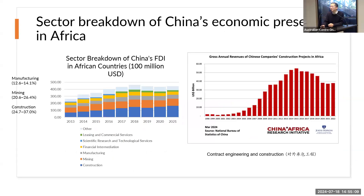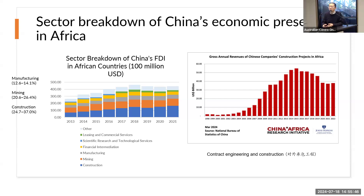If we break down FDI by sectors, Chinese economic presence is not only in mining but is growing in construction and manufacturing. Besides FDI, there's another form of Chinese economic presence — contract engineering and construction projects, called 'duiwai chengbao gongcheng' in Chinese. From the graph on the right, this is almost 10 times the total FDI volumes. We will come back to this later.